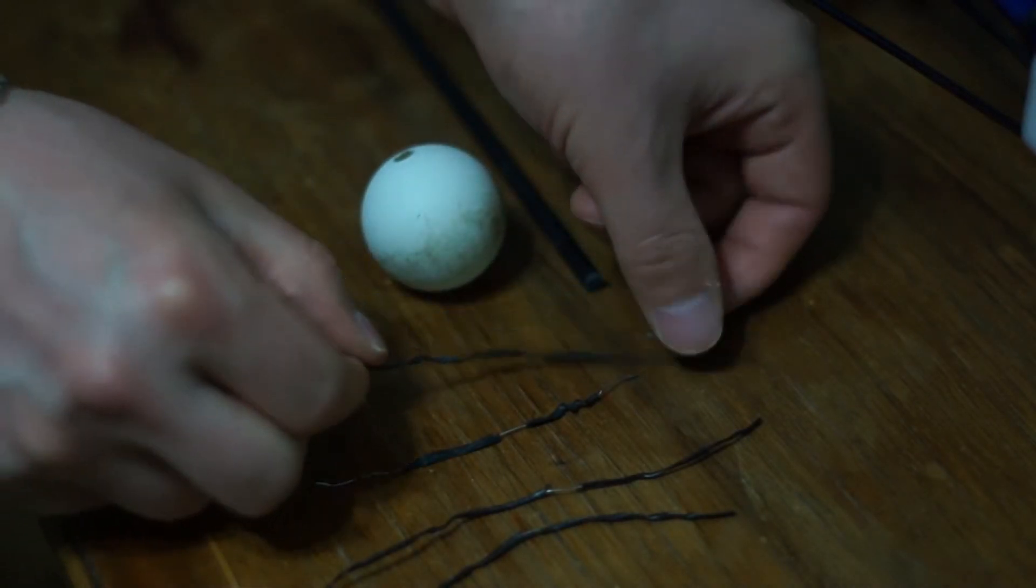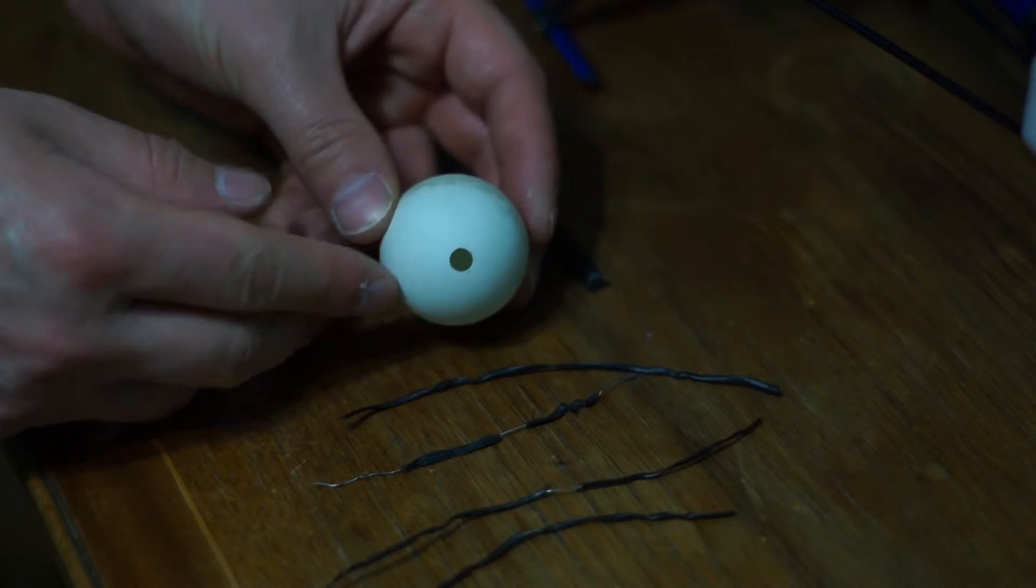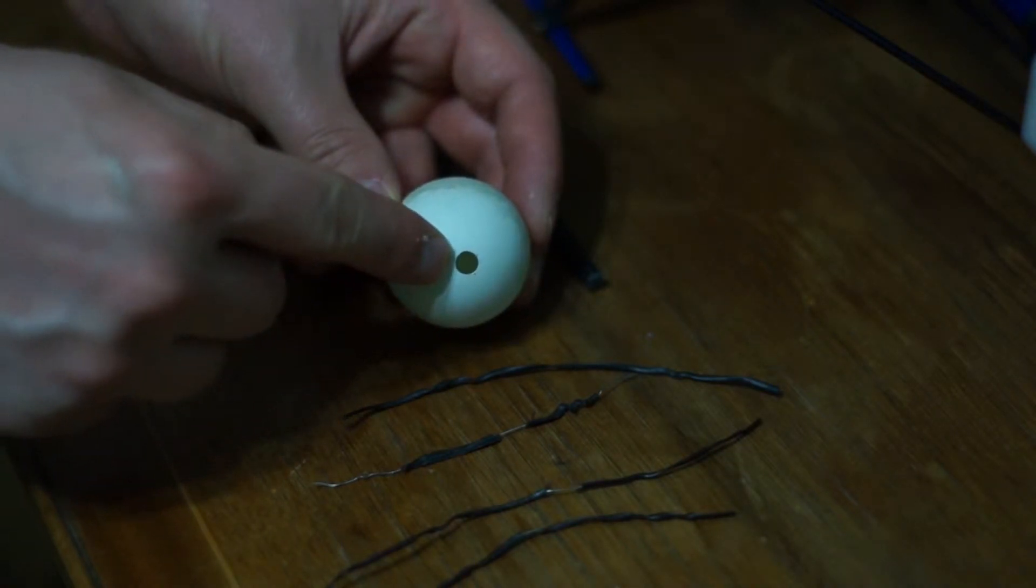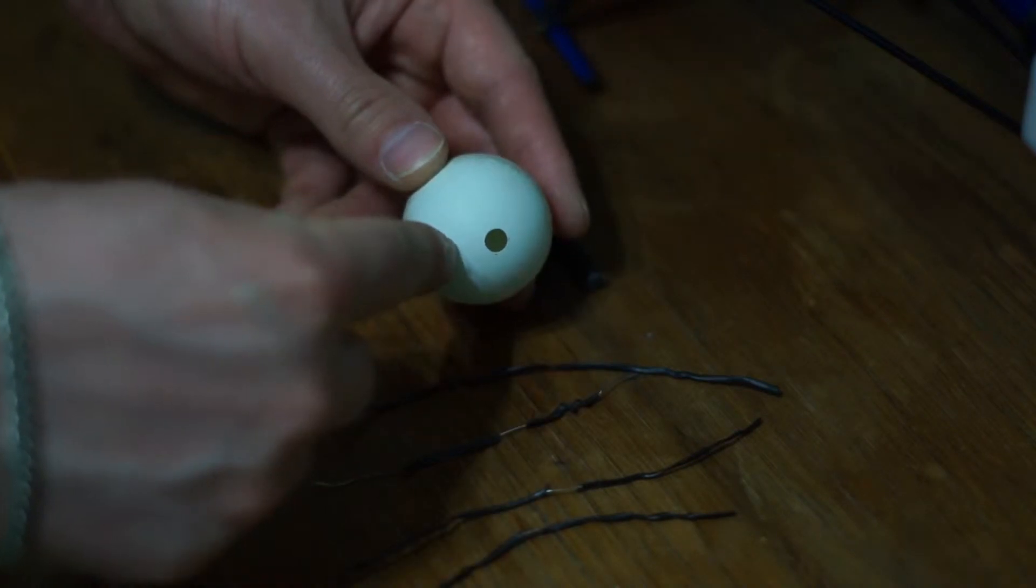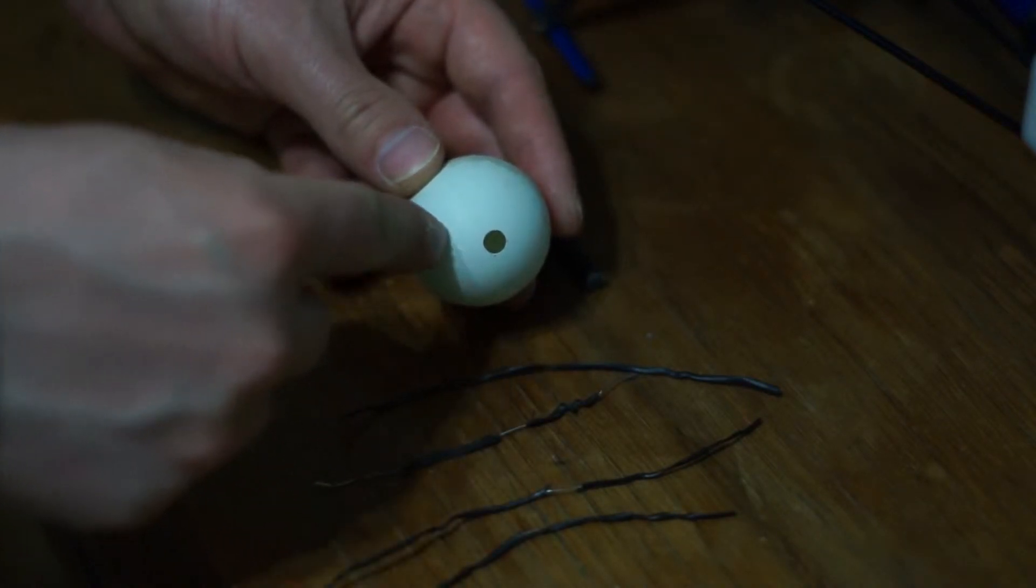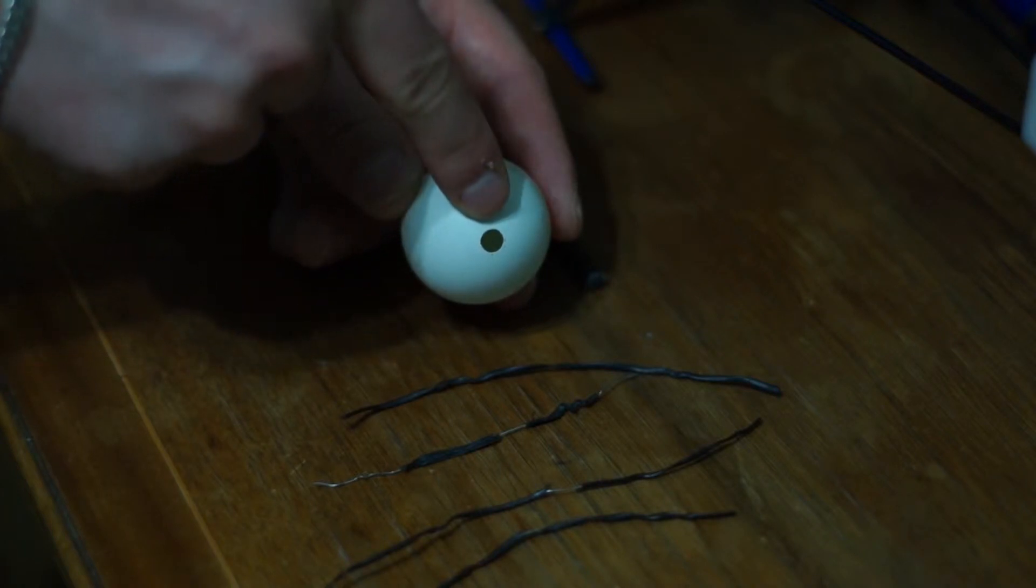Anyway, take this ping-pong ball and drill a hole in the middle. Then you want to drill another hole just about here. So you will get two ping-pong balls with the hole here in the middle and two ping-pong balls with the hole here on the side.